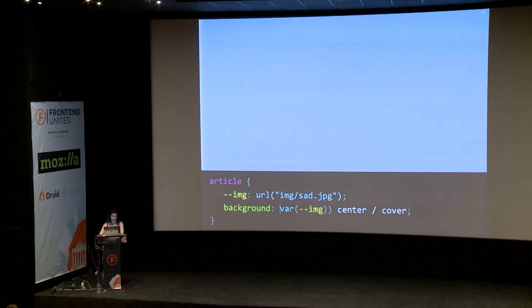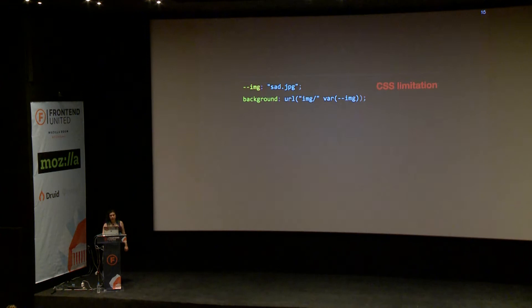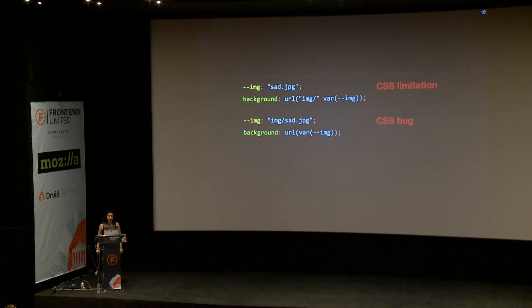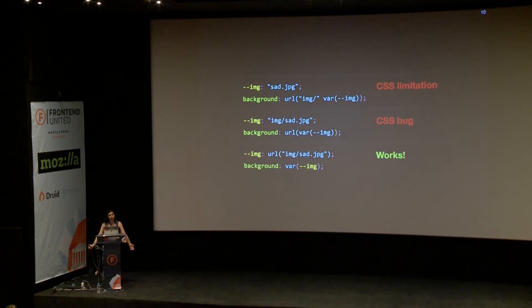My last attempt was to put the full URL function inside the variable, and as you can see, that works. It didn't used to work until recently — there was a Chrome bug. We resolved that and now it's not an issue. So to recap: we cannot concatenate URLs because of a CSS limitation. We cannot use variables inside the url() function because of a CSS bug. We can use them in every other function. Eventually we'll get another function for URL that works better and accepts variables, but for now we're stuck with this. If we use the whole URL in the variable it works, but it's less useful.